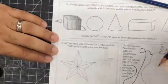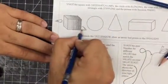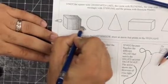And then obviously the cast shadow, we can use our 6B. And kind of finish that off.